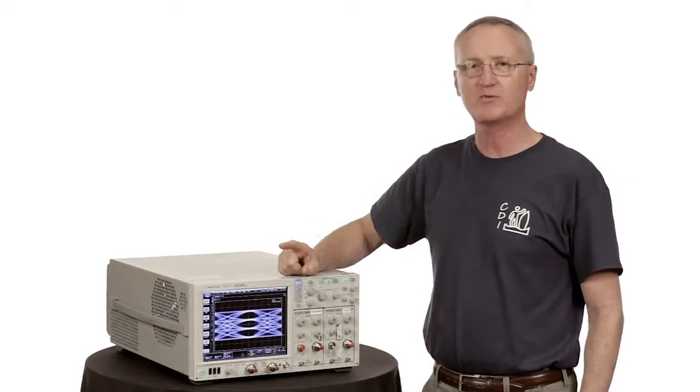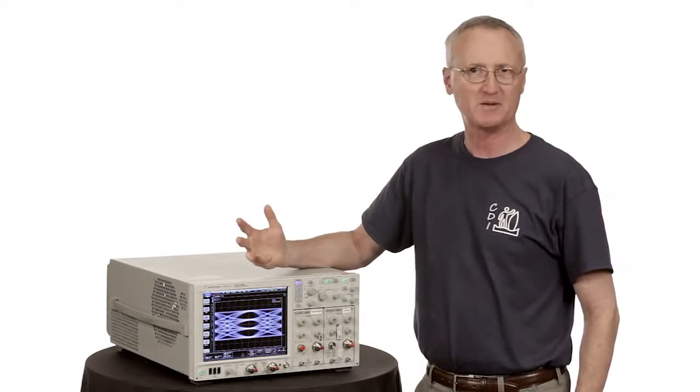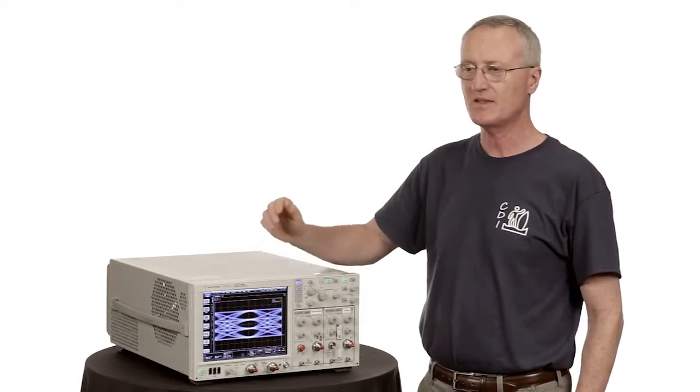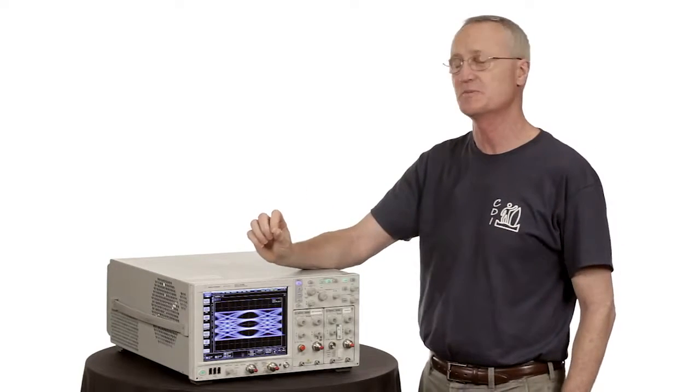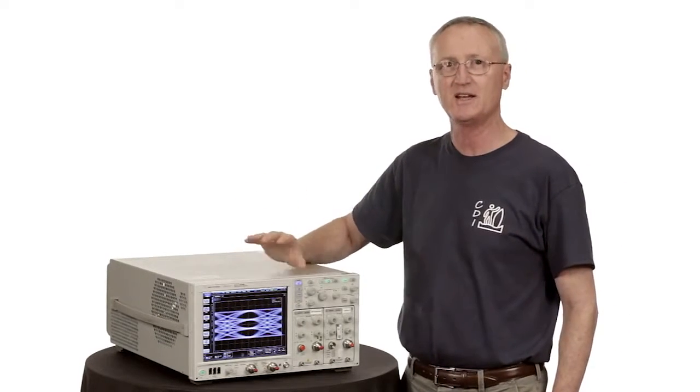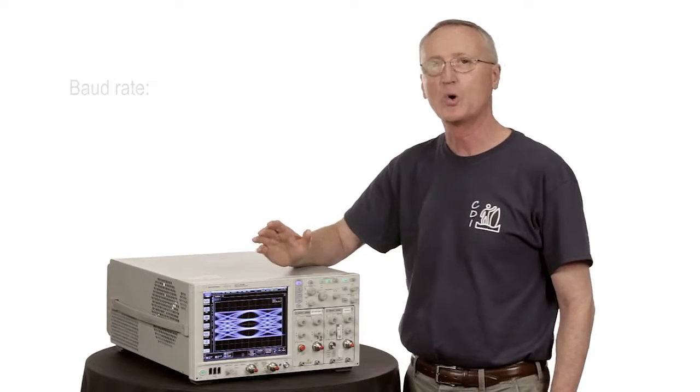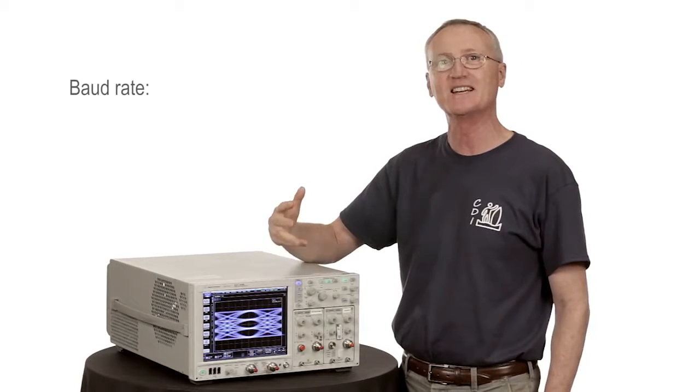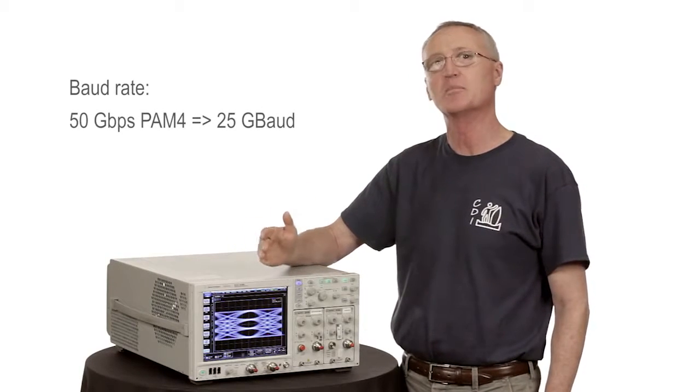When we think about a PAM-4 signal, for example, take a PAM-4 50 gigabit per second signal. The data rate is 50 gigabit per second. But the key thing in terms of bandwidth for the DCA is to think in terms of how fast that signal is switching or what the baud rate is. So a 50 gigabit per second PAM-4 would be a 25 gigabaud signal.